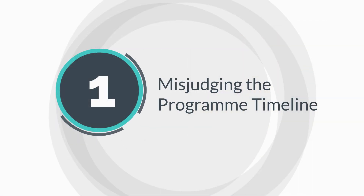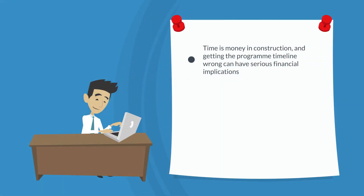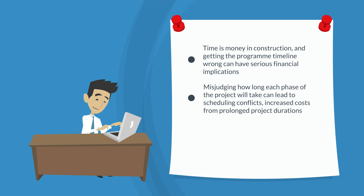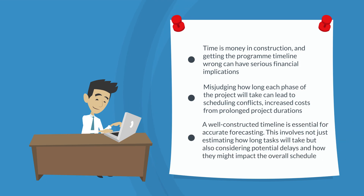Mistake one: misjudging the program timeline. Time is money in construction, and getting the program timeline wrong can have serious financial implications. Misjudging how long each phase of a project will take can lead to scheduling conflicts, increased costs from prolonged project duration, and even penalties for late completion. A well-constructed timeline is essential for accurate forecasting — this involves not just estimating how long tasks will take, but also considering potential delays and how they might impact the overall schedule.